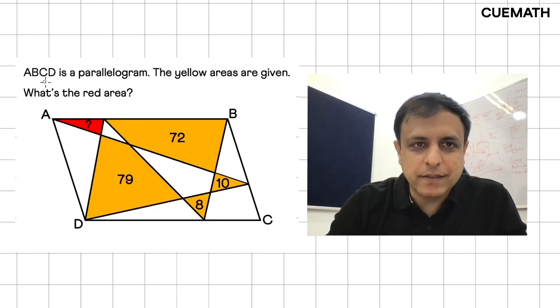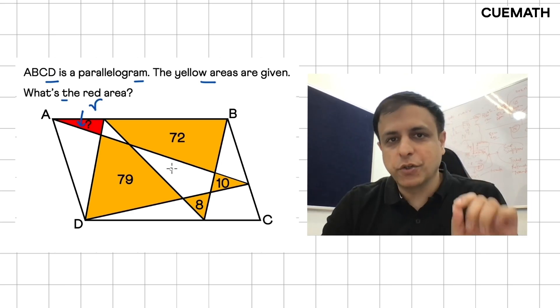This cool Math Olympiad question says that ABCD is a parallelogram and these four yellow areas, their values are given. We have to find the red area, this area here, let's call it R. Pause the video and give it a shot on your own.